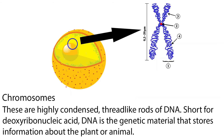Now, chromosomes — these are highly condensed thread-like rods of DNA, short for deoxyribonucleic acid. DNA is the genetic material that stores information about the plant or the animal.